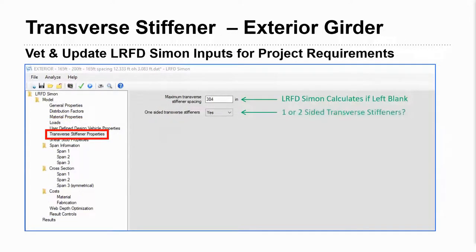The transverse stiffener properties tab is one of the easiest ones to input. There's only two. Simon will even calculate this top one for you. In general, it's 3D, three times the depth of your web. And then this is an exterior girder, so we are going to have one-sided transverse stiffeners, but if you have two-sided, you can toggle no here accordingly.